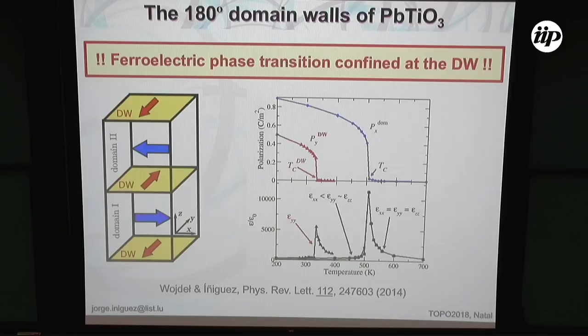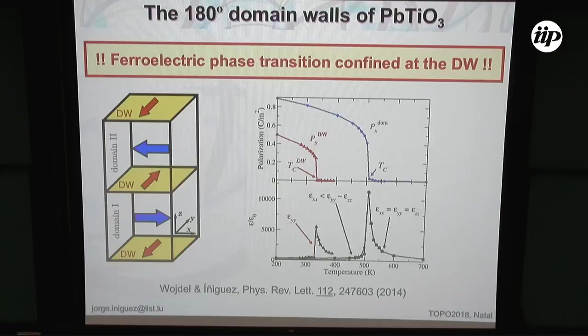This is a spontaneous symmetry breaking transition confined to the domain walls. The polarization of the wall is in the domain wall plane, orthogonal to the polarization of the domains. Here I'm plotting anti-parallel alignment of polarization between domain walls — these two actually almost don't see each other, and there is no strong correlation between what happens in different domain walls once they are a bit apart.